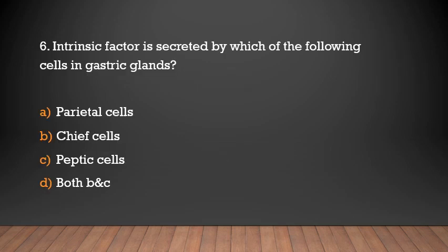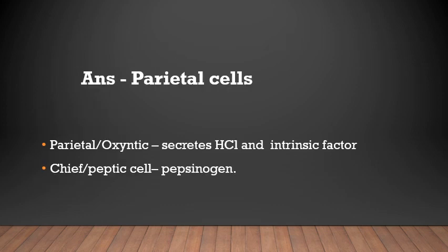Intrinsic factor is secreted by which of the following cells in gastric glands? Parietal cells, chief cells, peptic cells, or both B and C? Answer: Parietal cells. Parietal (oxyntic) cells secrete HCl and intrinsic factor. Chief cells, also called peptic cells, secrete pepsinogen.